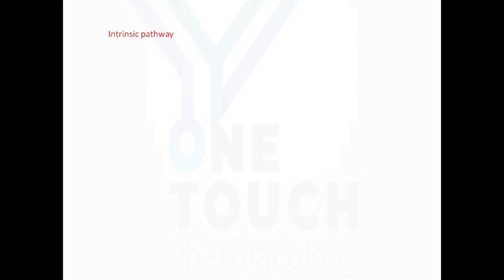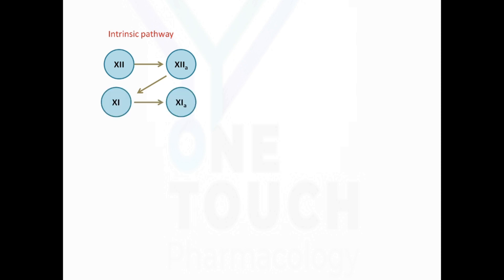To understand the mechanism of action, let's refresh some physiology and look into the coagulation cascade. Firstly, the intrinsic pathway — it is called the intrinsic pathway because all the factors needed for this pathway are present in the plasma itself. It starts off with activation of factor XII, which in turn activates factor XI. Activated factor XI activates factor IX.